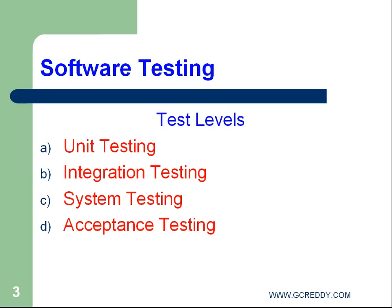Next is system testing. Generally, independent testers — separate testing teams — perform this type of testing using black box testing. No need to be aware of the code. White box means structural testing. System testing generally uses black box, or specification-based, test design techniques.